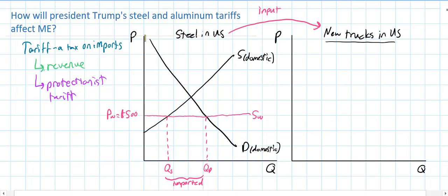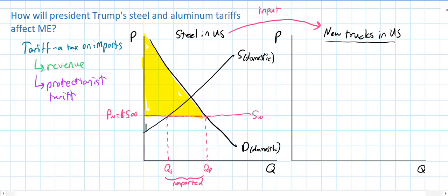Let's look at the consumer surplus in the steel market, which represents the welfare or happiness of all the companies that buy steel. It's represented by the yellow triangle — the difference between what consumers of steel were willing to pay and what they actually had to pay, that $500 world price. The domestic producer surplus is a relatively small blue triangle, showing how profitable American steel producers are. At the world price of $500, they're not doing all that great, as other countries have much lower costs in steel production.